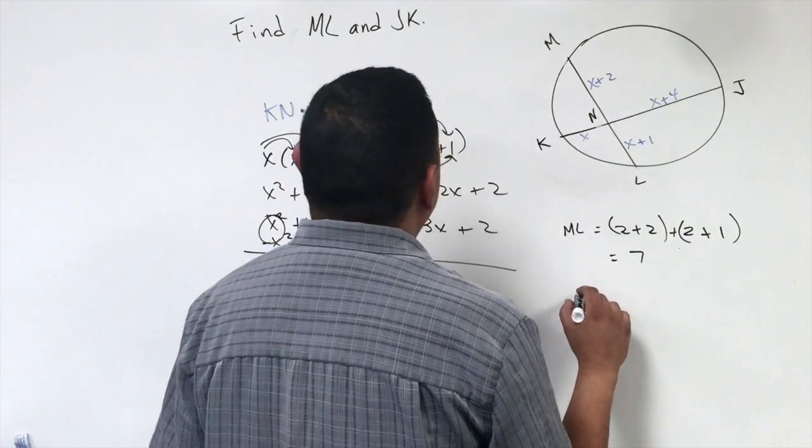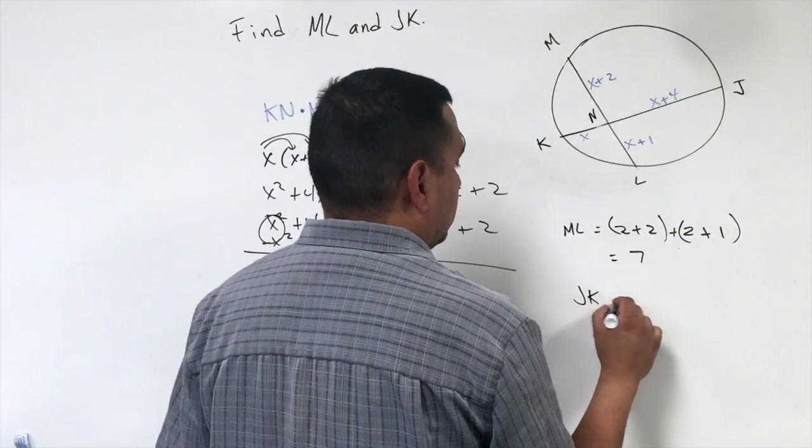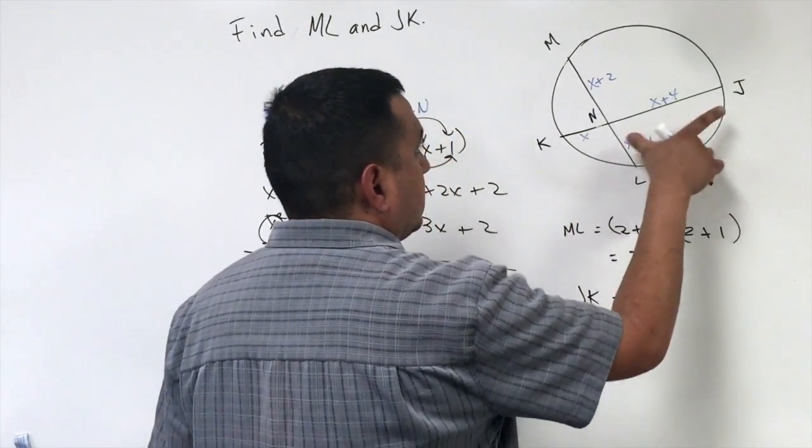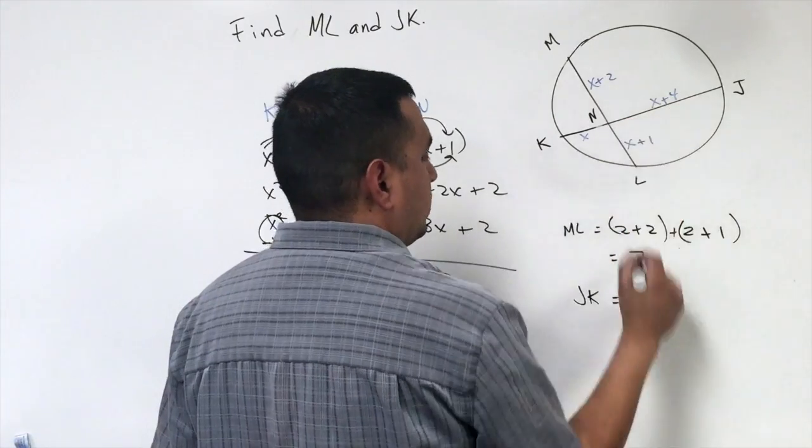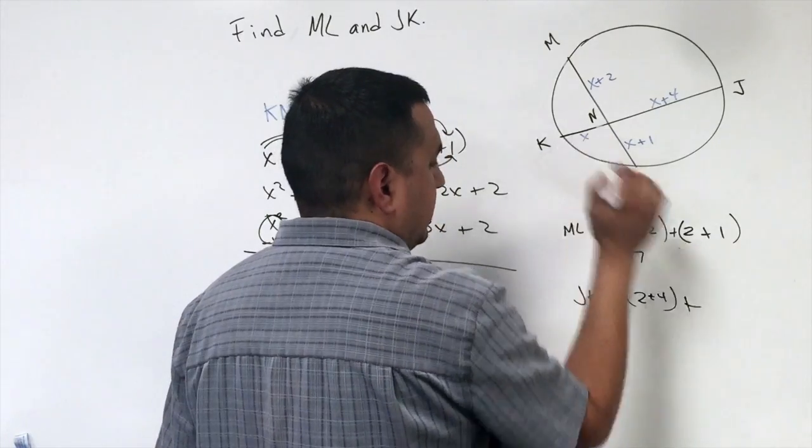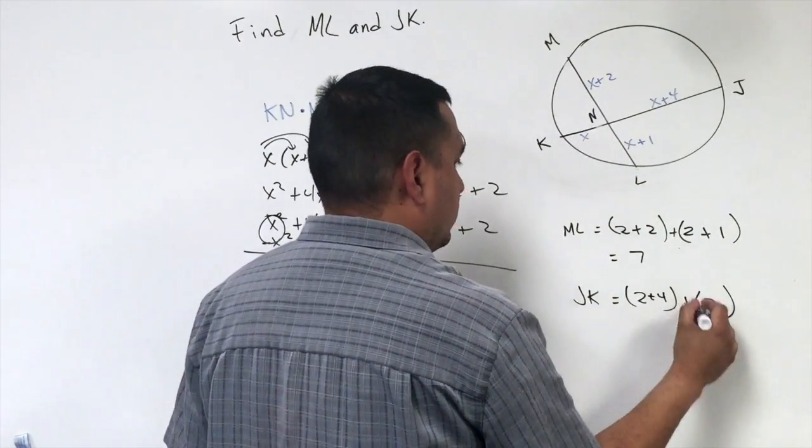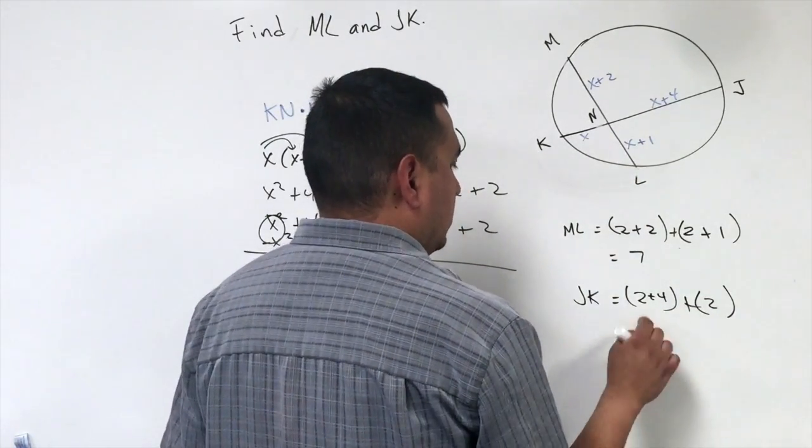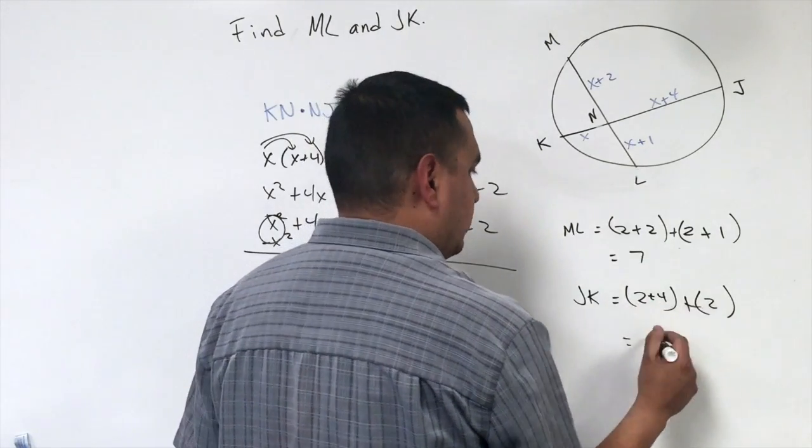Now for the JK side, I'm going to take J to N, which would be 2 plus 4, plus the K to N side, which is just 2, by substituting. So 2 plus 4 is 6, 2 more makes 8.